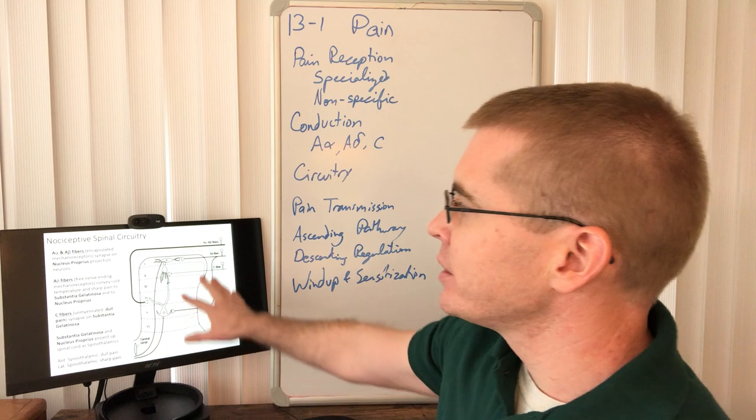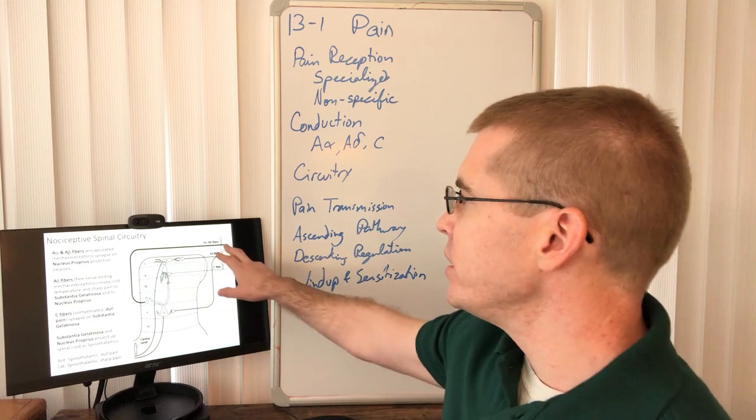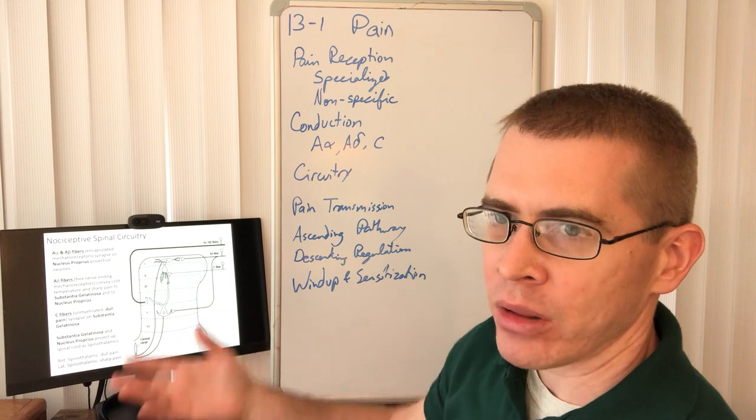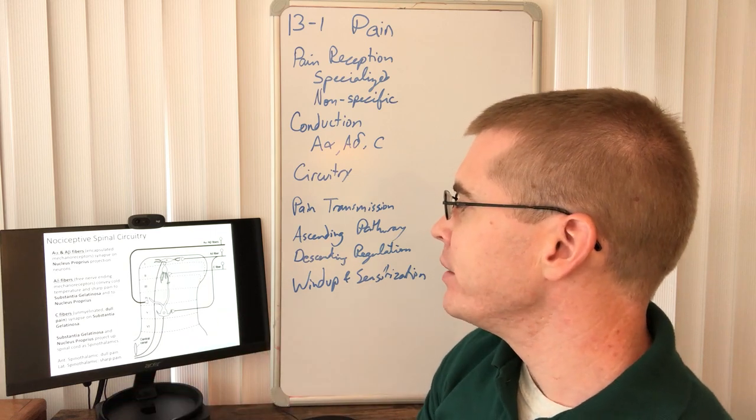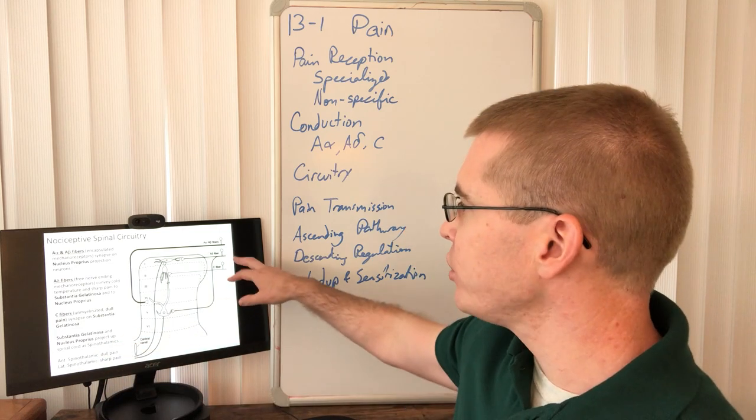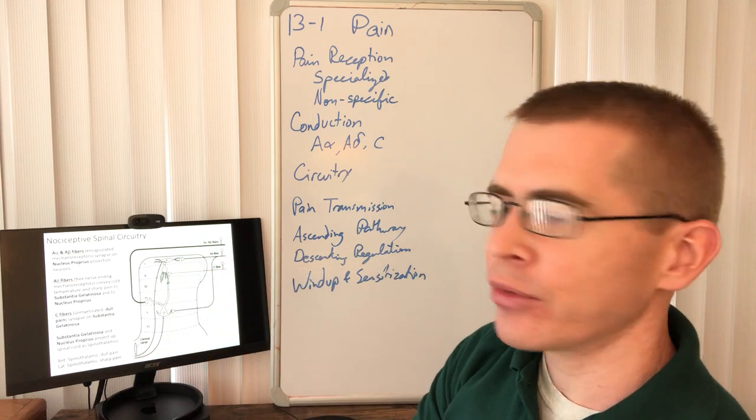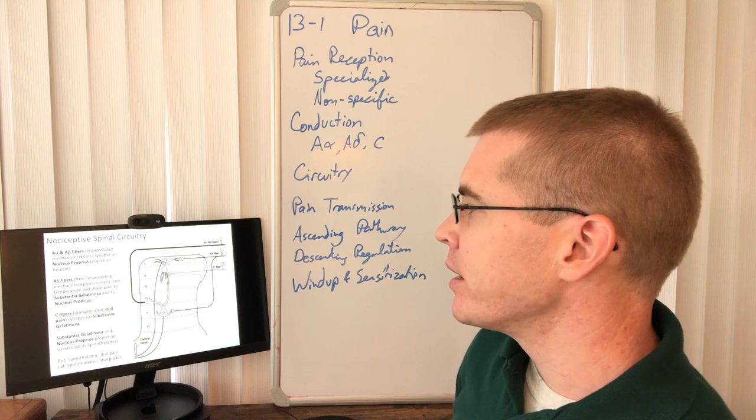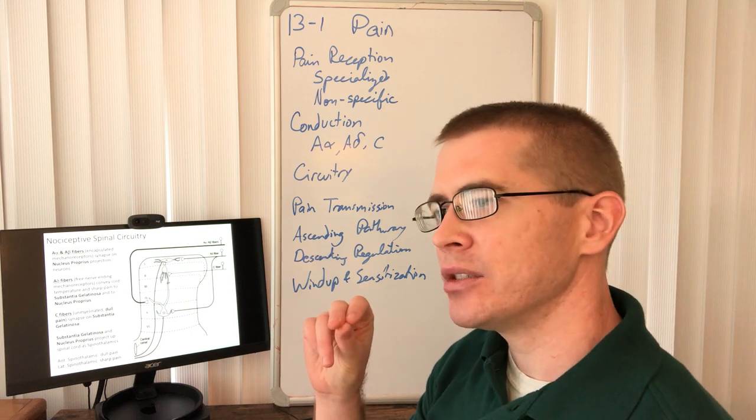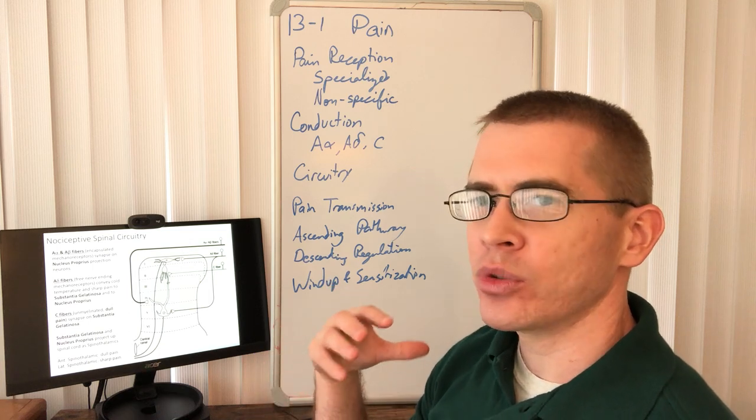So here is the nociceptive circuitry within the spinal cord. So we know these A-alpha fibers are going to the nucleus propria in about lamina 4. And then those fibers are contributing to the ascending pathways. A-delta fibers are synapsing in substantia gelatinosa. But for a variety of reasons, we believe that there are collaterals because pain doesn't work on this very simple way. Pain can be modulated based on the situation you're in.